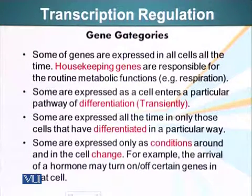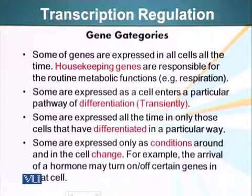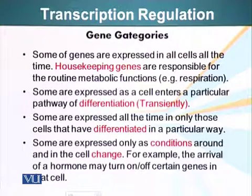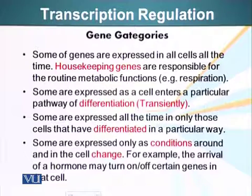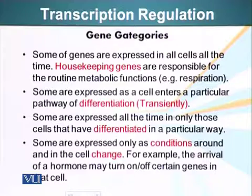Some genes are transiently expressed, meaning that at a specific time point in the life of a cell they are expressed — that generally happens when a cell is starting to differentiate. Some genes are expressed all the time in cells that have differentiated into a particular type. For example, neurons make a protein called tau, which is specific to neurons — it is a protein that bundles microtubules and will not be found in all cells. Some genes are expressed only when it is required that cells make that particular protein, and this is the type of gene we will be most interested in.